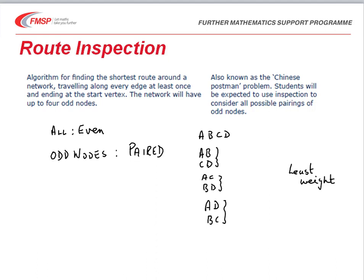Finally, a question may go on and say it's possible in some circumstances to start and end at different points. If that is the case, then we can have two odd nodes allowed. If we have two odd nodes, then we can start and end at those nodes. Those produce the start and end points for the route.